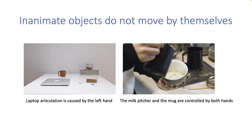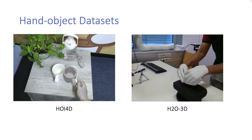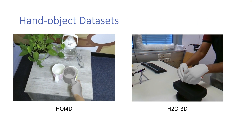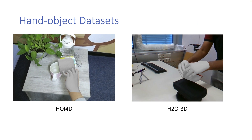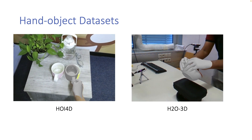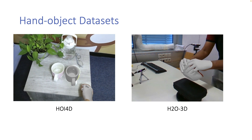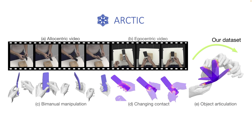This is not yet the case for machines. This is partly because existing datasets focus on grasping rigid objects and contain few or no examples of dexterous object manipulation, and they do not study object articulation with hand motion. To enable the study of dexterous articulated hand object manipulation, we collect a novel dataset called Arctic.